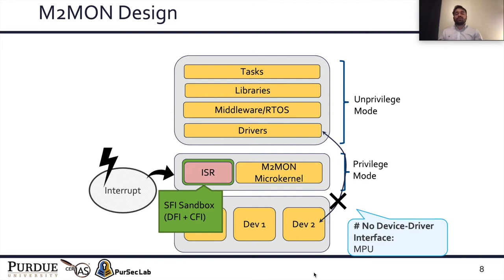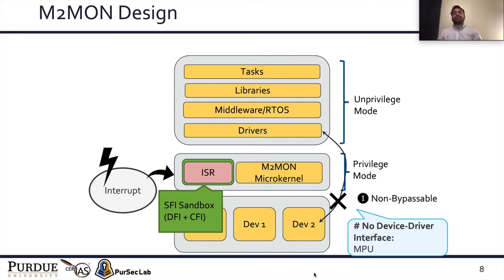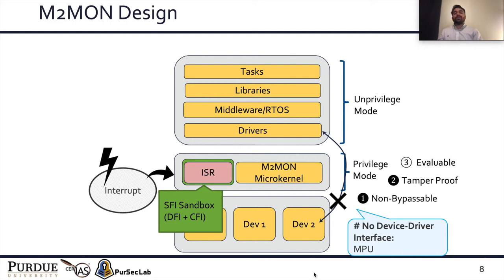To contain these interrupt handler routines in the privileged mode, we use software fault isolation techniques such as control flow integrity and data flow integrity. Using these techniques, we ensure three things: first, these interrupt handlers are not able to access M2Mon data or code; second, they are not able to jump outside the interrupt handlers or outside the sandbox; and lastly, we ensure that they do not access IO directly. Using this design, we ensure that the M2Mon microkernel is non-bypassable, that no one in the system can modify the microkernel logic, and we keep the TCB of the microkernel really small so that it is easily auditable.